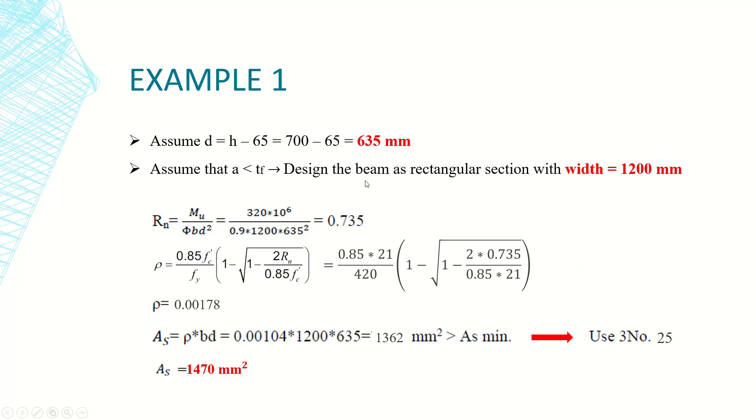I forgot to mention we also have a third assumption which is phi. We will assume that the section is ductile and it's tension control section, so the phi factor will equal 0.9. This assumption also to be checked. So we have three assumptions to be checked.